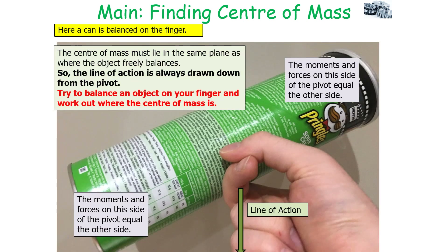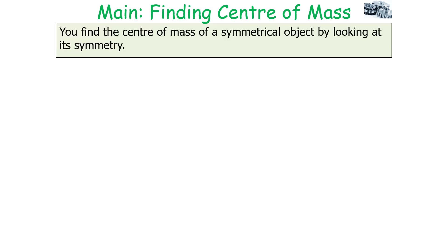Here, a can is balanced on a finger. Again, the centre of mass must lie in the same place as where the object freely balances, so the line of action is always drawn down from the pivot or balance point. So if you try to balance an object on your finger, you can work out where the centre of mass is by the point at which it balances.